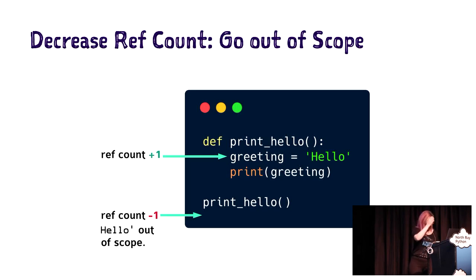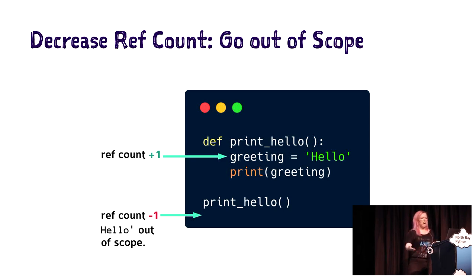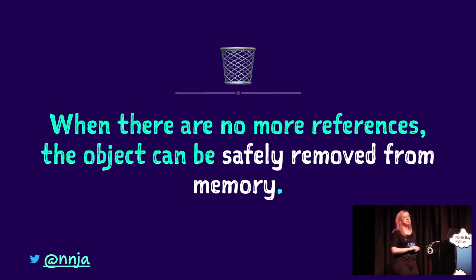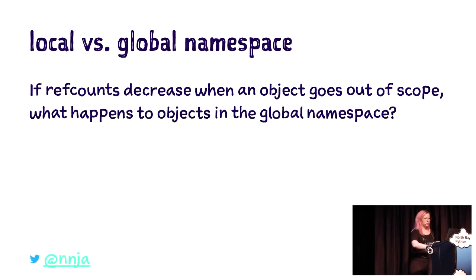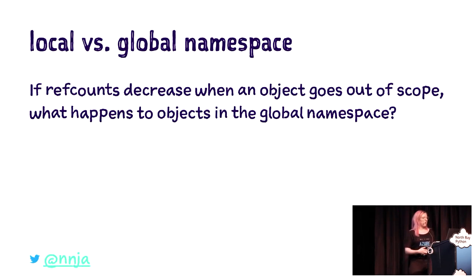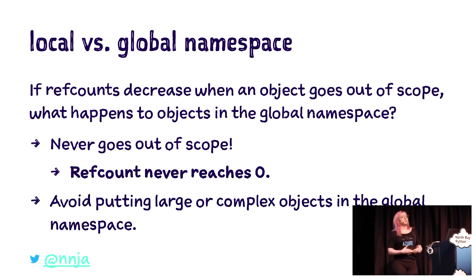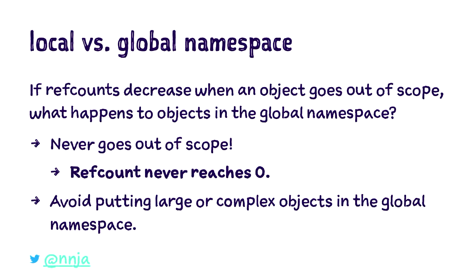Here's a simple function that prints 'hello.' When it runs, I set greeting to equal the string 'hello' and then print it. As the function is running, the reference count to the word 'hello' increases by 1. After the function is done, the greeting variable goes out of scope, and the reference count decreases. Once there are no more references, we can safely remove that object from memory. That's where we need to be careful with local versus global namespaces. Objects in the global namespace might never go out of scope, which means their reference count might never reach zero.